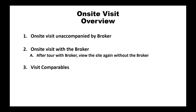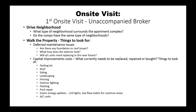This is an on-site visit overview. First, visit the property unaccompanied by the broker or anyone associated with the apartment complex. Second, go on-site with the broker. Then walk the property again without the broker so you can view it uninterrupted. The third stage is to visit the comparables. On the first unaccompanied visit, gather as much information as possible, since you'll be in that neighborhood for a long time if you purchase the property. Start by driving the neighborhood to understand what type of area surrounds the complex.